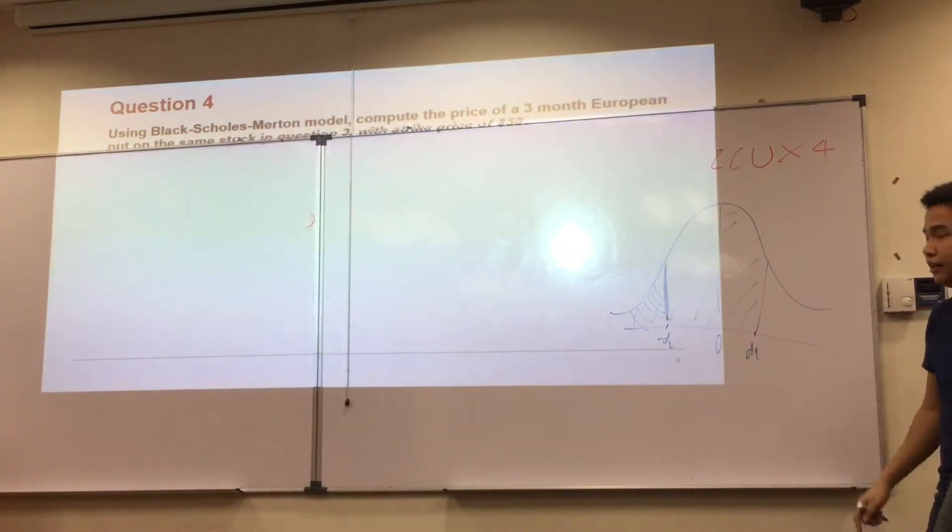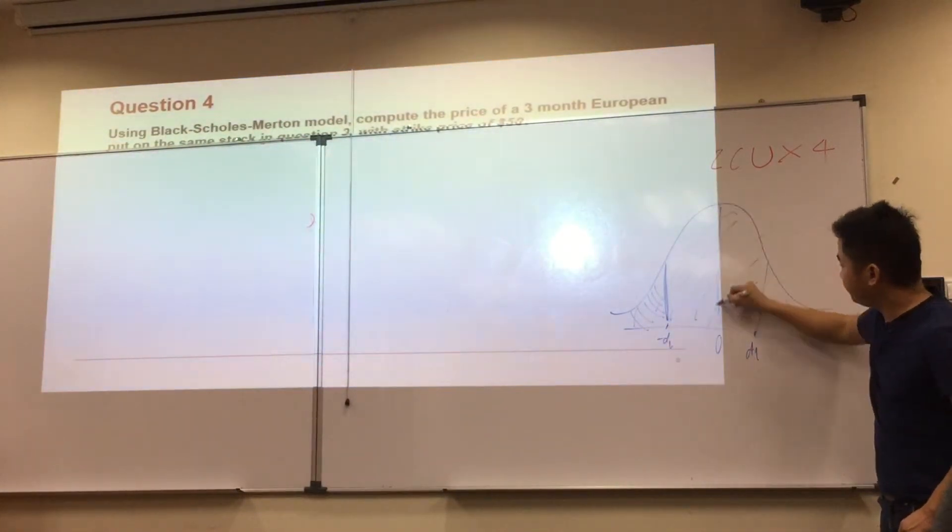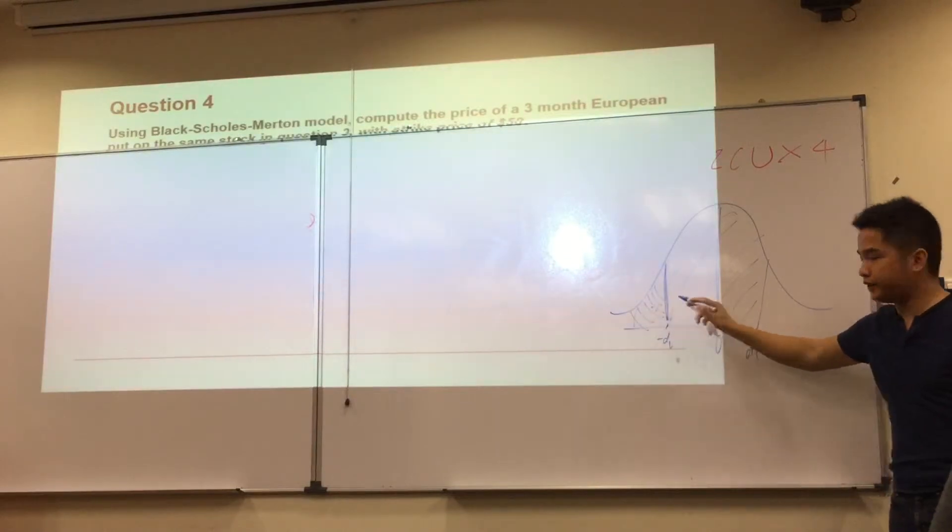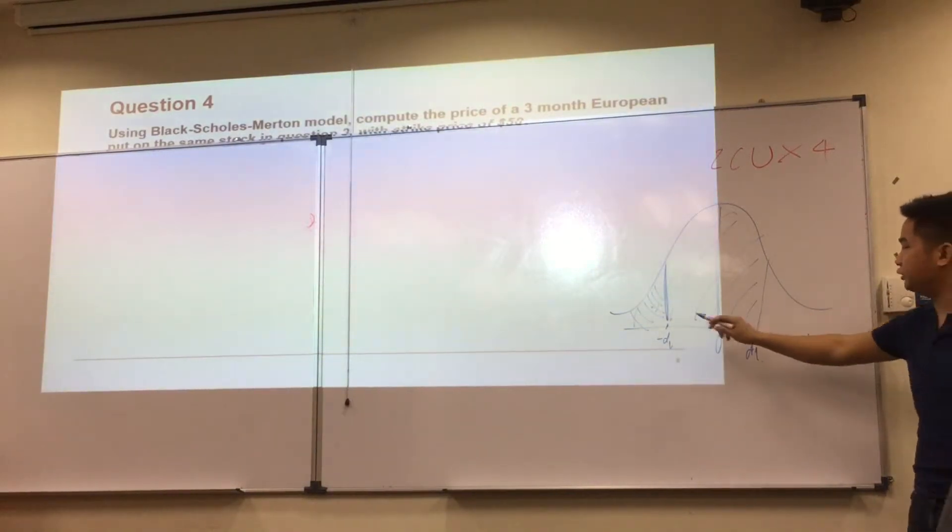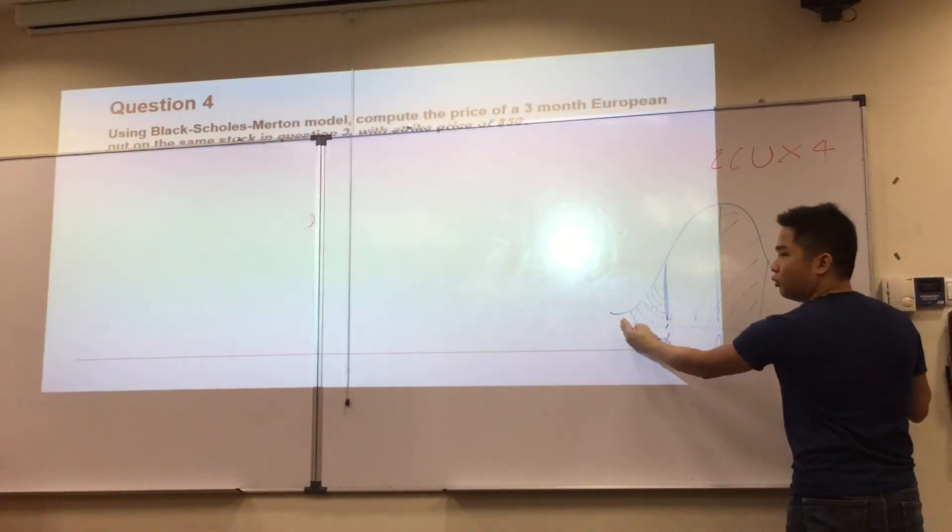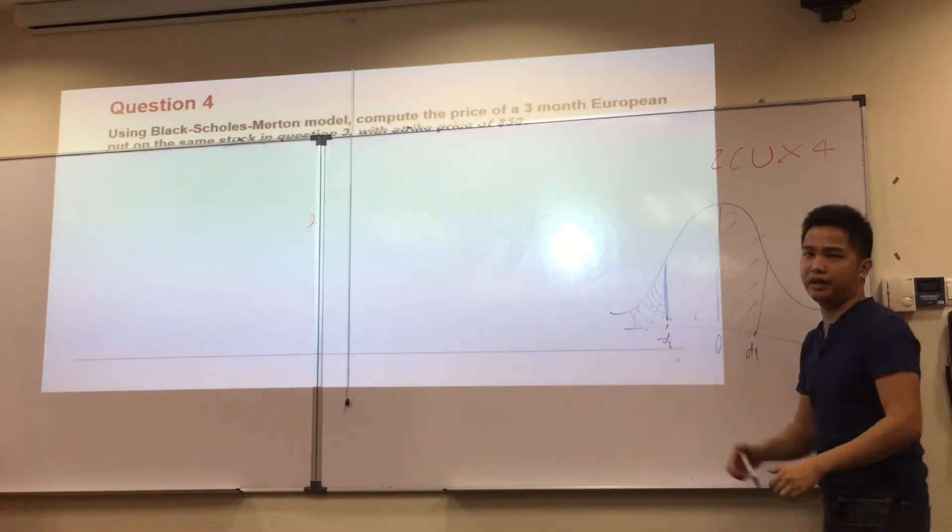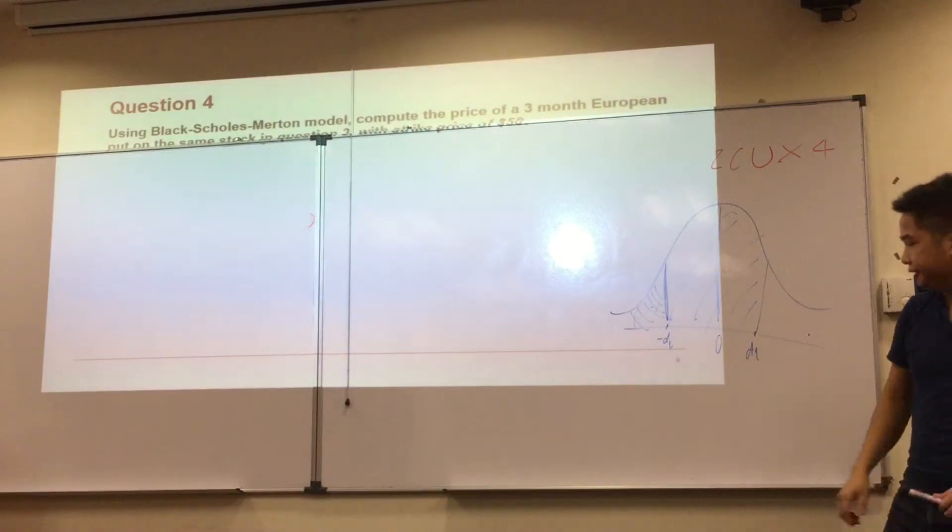Left-hand side has the same as right-hand side. So the value you're looking for here is equal to this one. So you see that this is actually the whole thing, 1 minus N of D1. You can get the value N of negative D1.